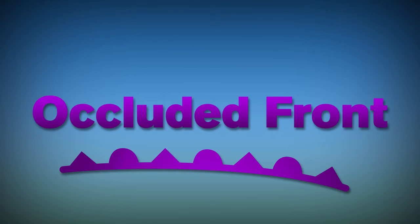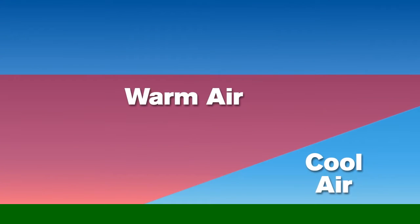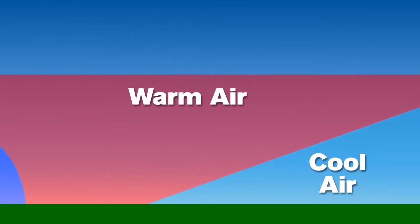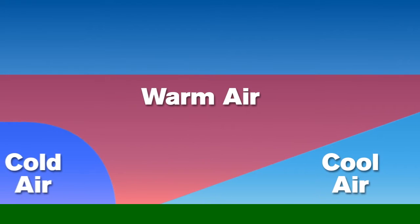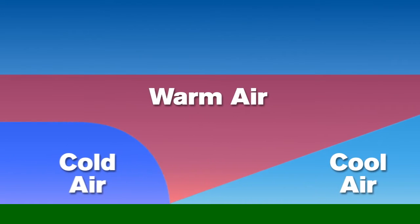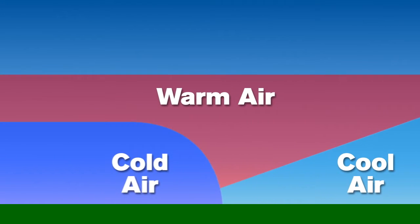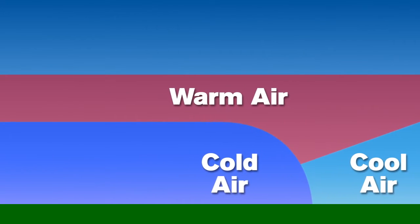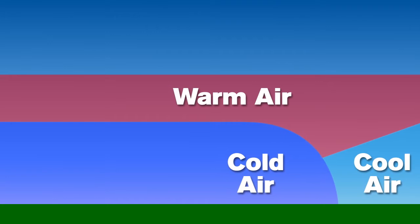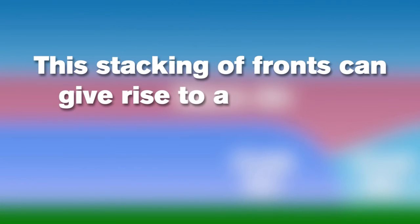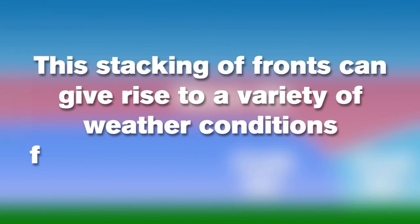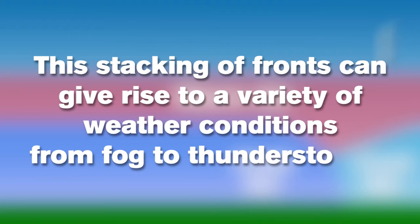The last type of front is called an occluded front. Occluded fronts form when a fast-moving cold front catches up to a slower-moving warm front. The cold front will then lift up the warm front and eventually interact with the air that is in front of the warm front. The stacking of fronts can give rise to a variety of weather conditions, from fog to thunderstorms.